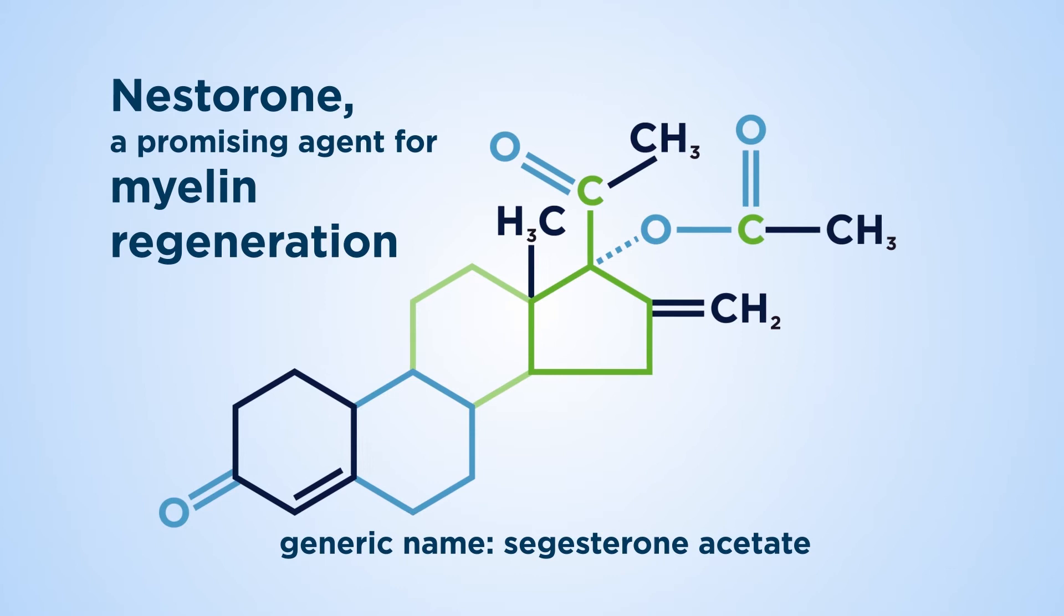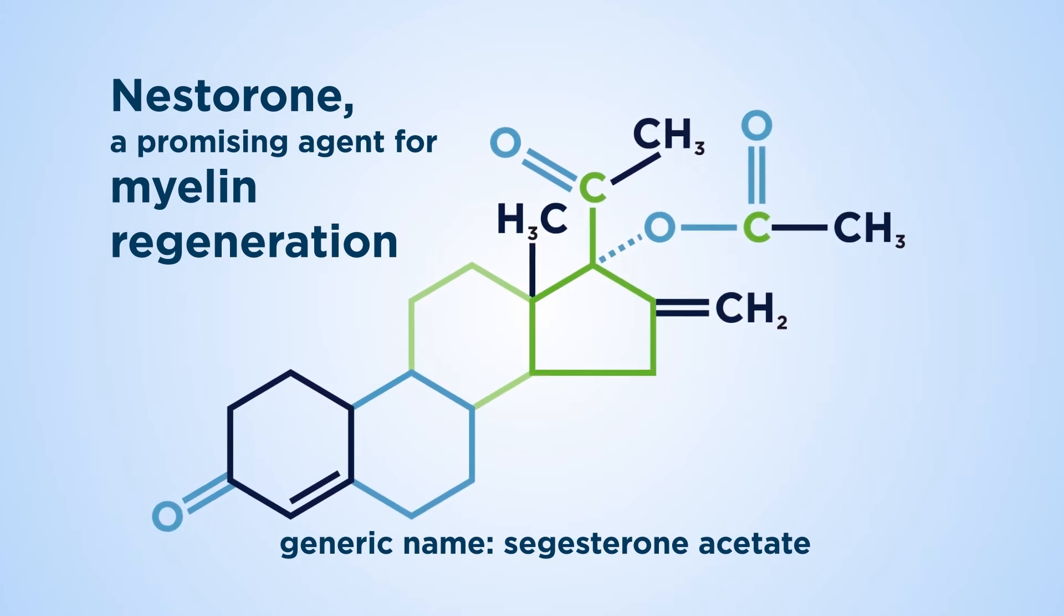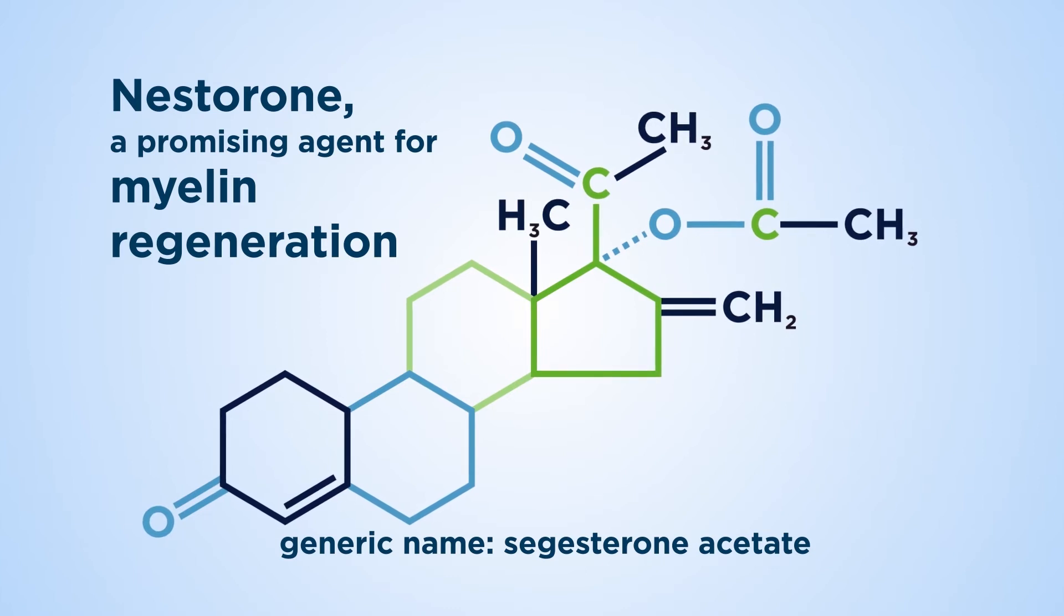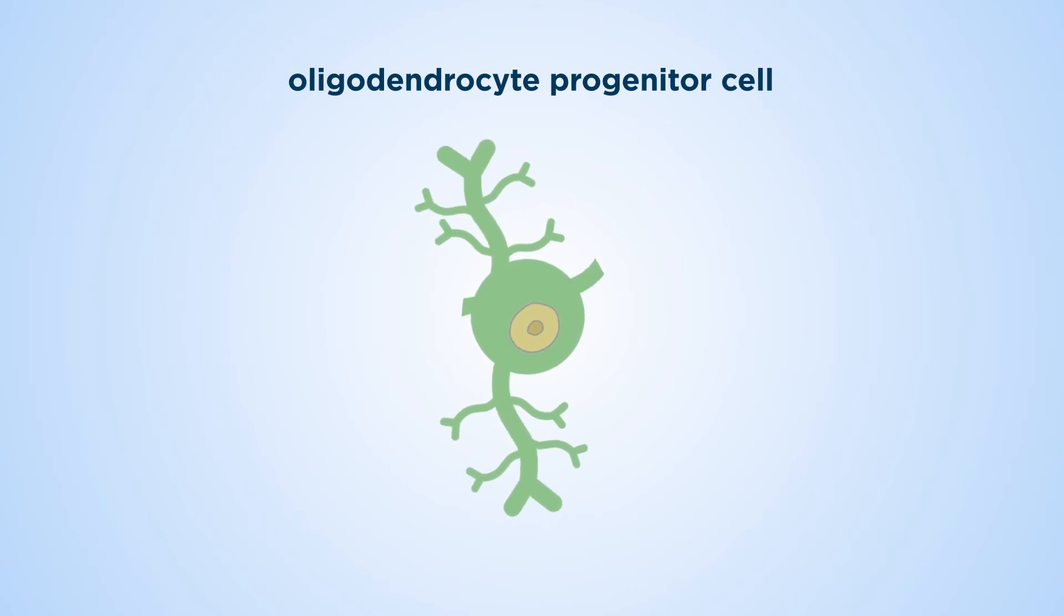Together with leading university laboratories, they have demonstrated the potential of nestorone to induce remyelination in animal models. In the brain and spinal cord, cells called oligodendrocytes, which arise from precursors called oligodendrocyte progenitor cells, can produce myelin.